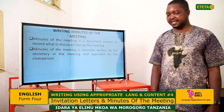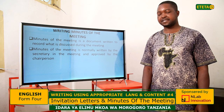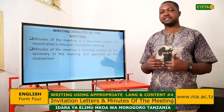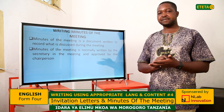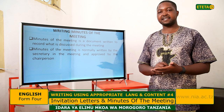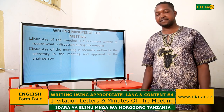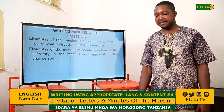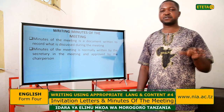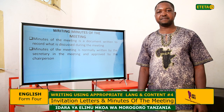The minutes of the meeting are normally written by the secretary and approved by the chairperson. The work of the secretary is to jot down whatever is being discussed by those attending the meeting. The chairperson acts as a guide — the one who guides the proceedings of the meeting. The secretary writes down the agenda and what is spoken by participants. The secretary and chairperson work together and normally sit in front of those who have attended the meeting.